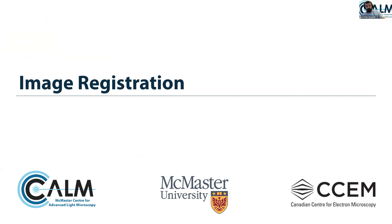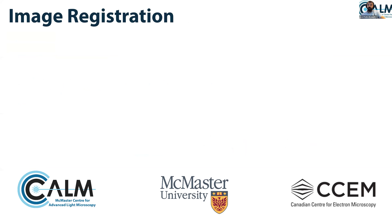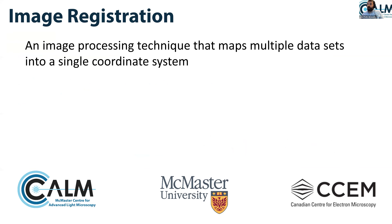Today we're going to be talking about image registration. For those of you that aren't aware, image registration is basically an image processing technique that maps multiple datasets into a single coordinate system. To put it simply, we're going to be dealing with movement today — everything that's an image that moves. If you have a set of images where you follow an object moving along space and time, what registration does is map the particles to a single coordinate system so you can pinpoint and track them through time and space.